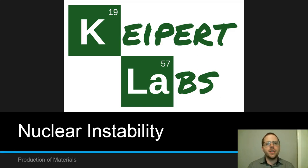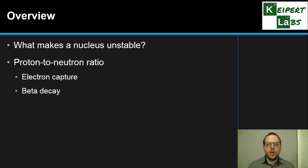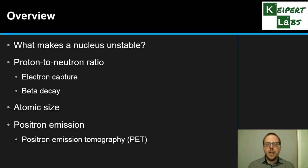So what makes the nucleus of an atom unstable and likely to be radioactive? We're going to talk about some of the particular characteristics that make a nucleus unstable. We're going to focus on one called the proton to neutron ratio and looking at electron capture and beta decay as processes that atoms will undergo if this is a problem for them, and also atomic size. We're also going to look at another type of radioactivity called positron emission, something which is highly useful in the technique called positron emission tomography or PET, a type of medical imaging technique.